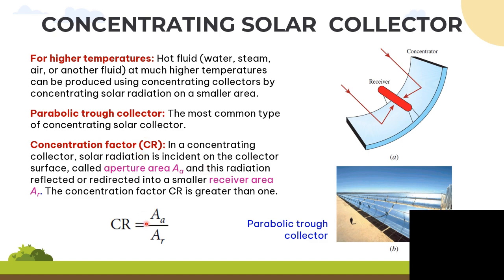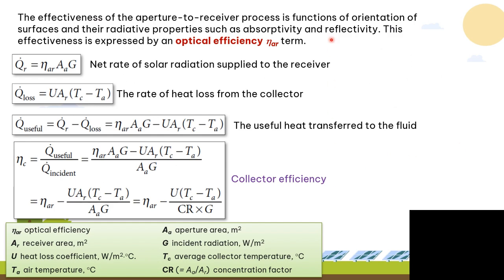The concentration factor CR is defined as the aperture area divided by the receiver area AR. This is the ratio of the solar radiation incident on the collector surface to the radiation reflected over the smaller receiver area. Here are the formulas and examples of parabolic trough collectors.